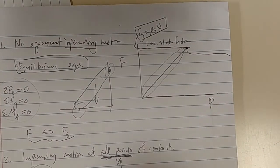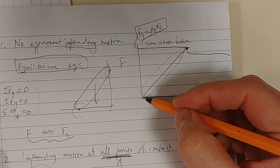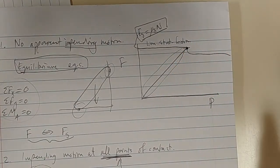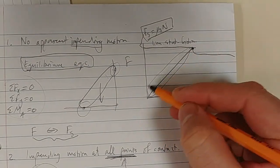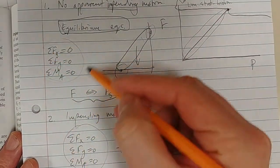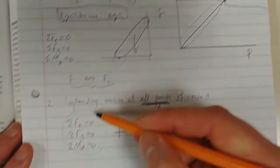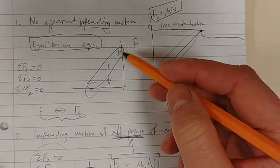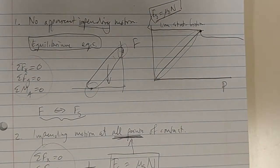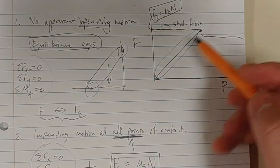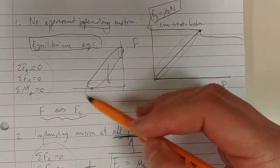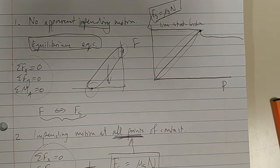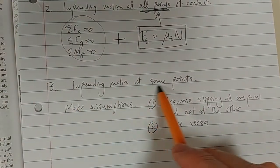Essentially, these are the three kinds of problems we will face. As long as we know how to approach it and where we are on the graph, we'll be able to solve any problem. If we are not at impending motion, use only equilibrium equations. If we are at impending motion, use equilibrium equations plus static frictional force. If some points are there and some aren't, make assumptions. In the next video, I will do a problem on impending motion at some points.